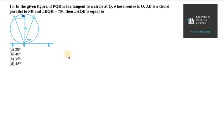In the given figure, if PQR is the tangent to the circle at Q whose center is O, AB is a chord parallel to PR and angle BQR is 70 degrees, then angle AQB is equal to what? We need to find this whole angle AQB.